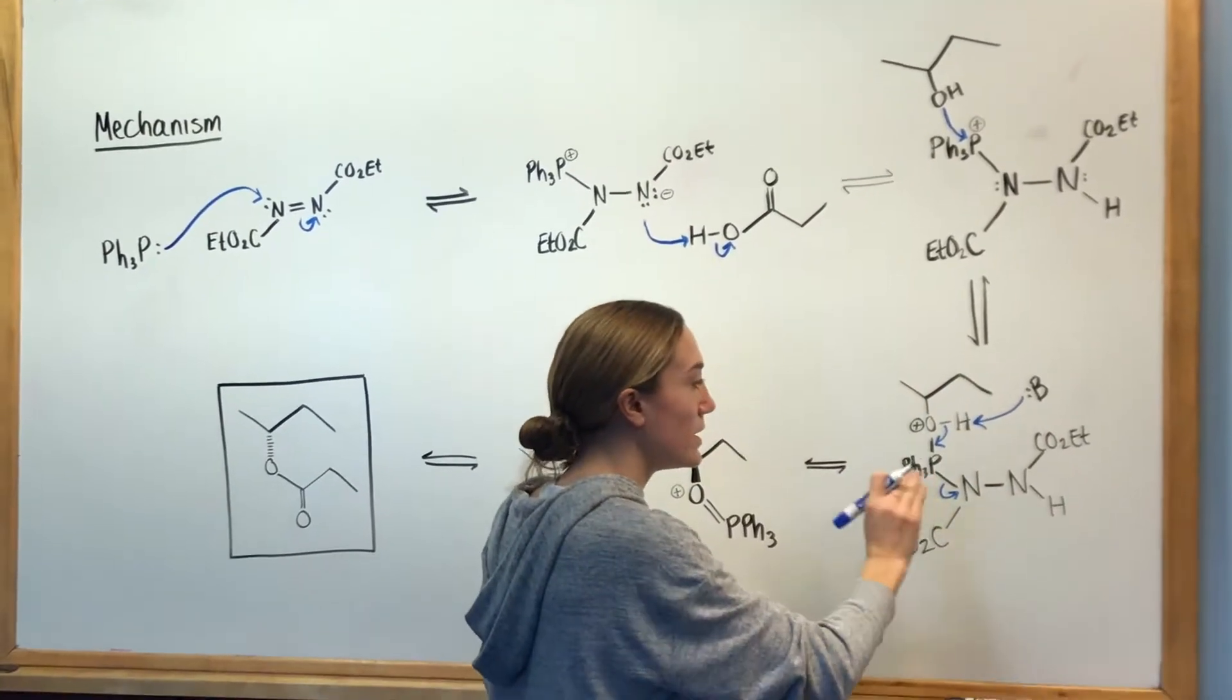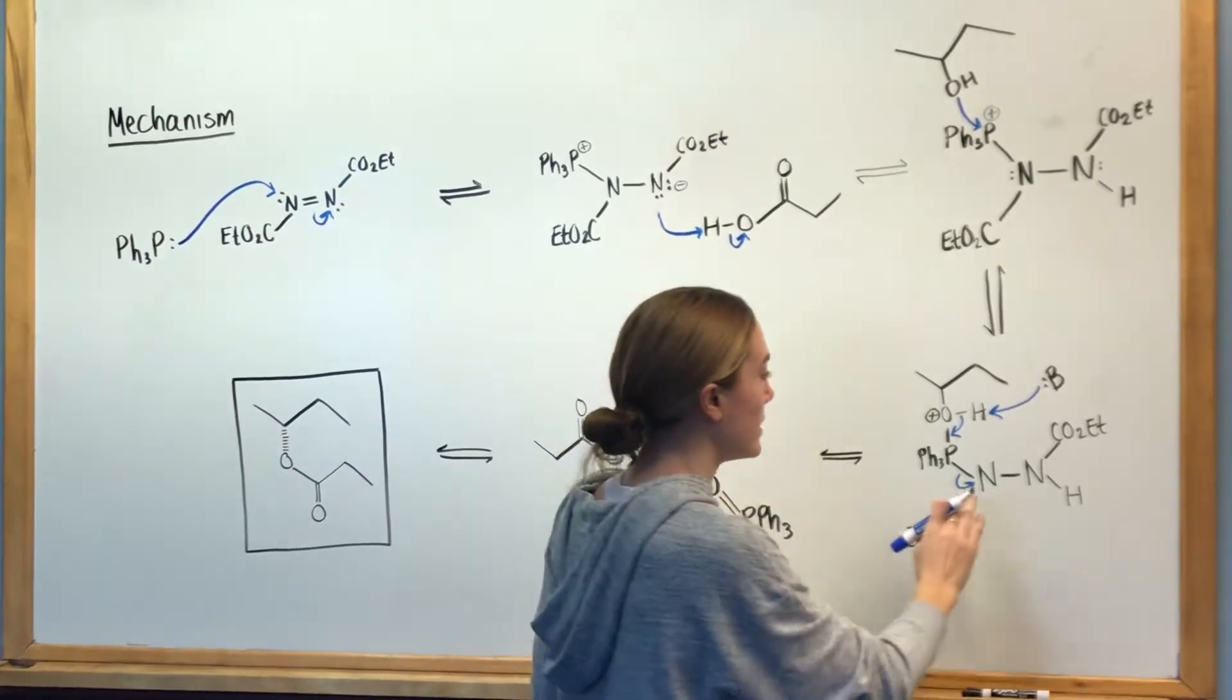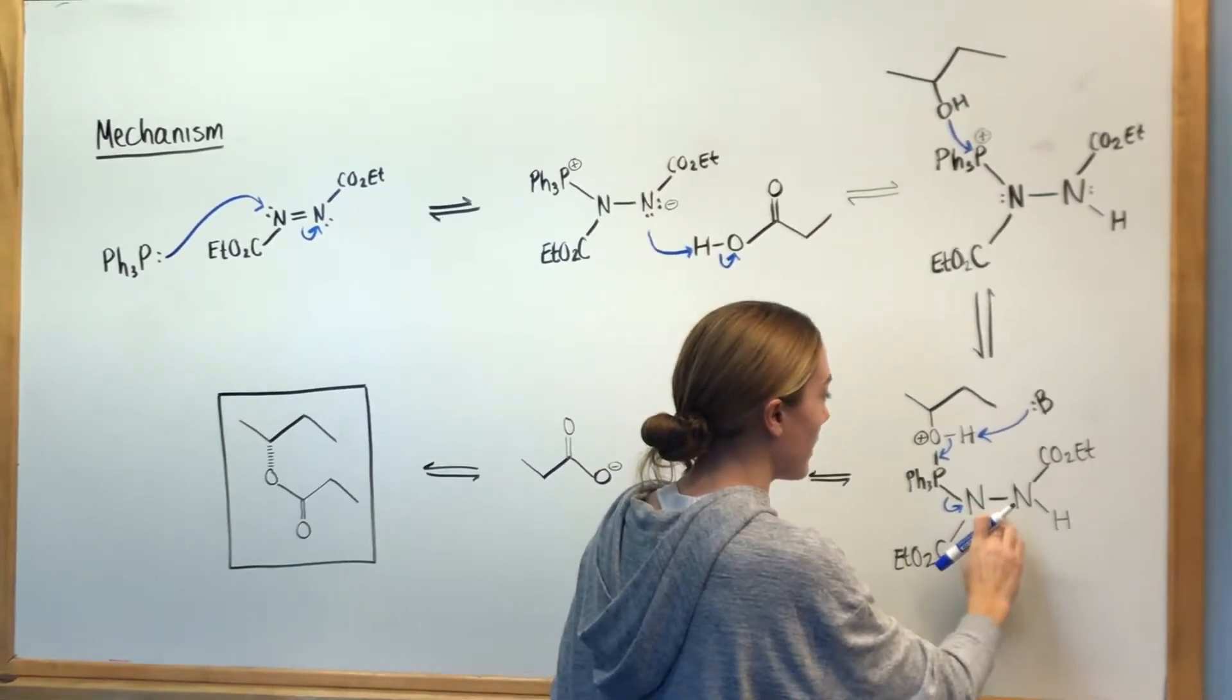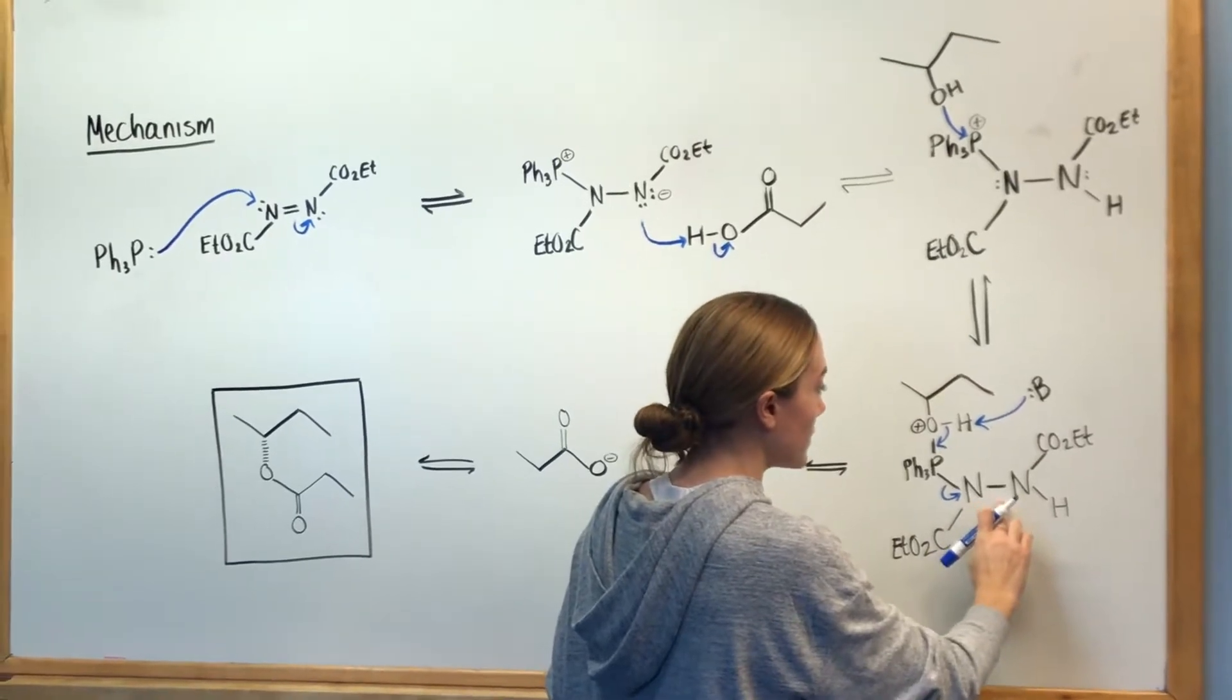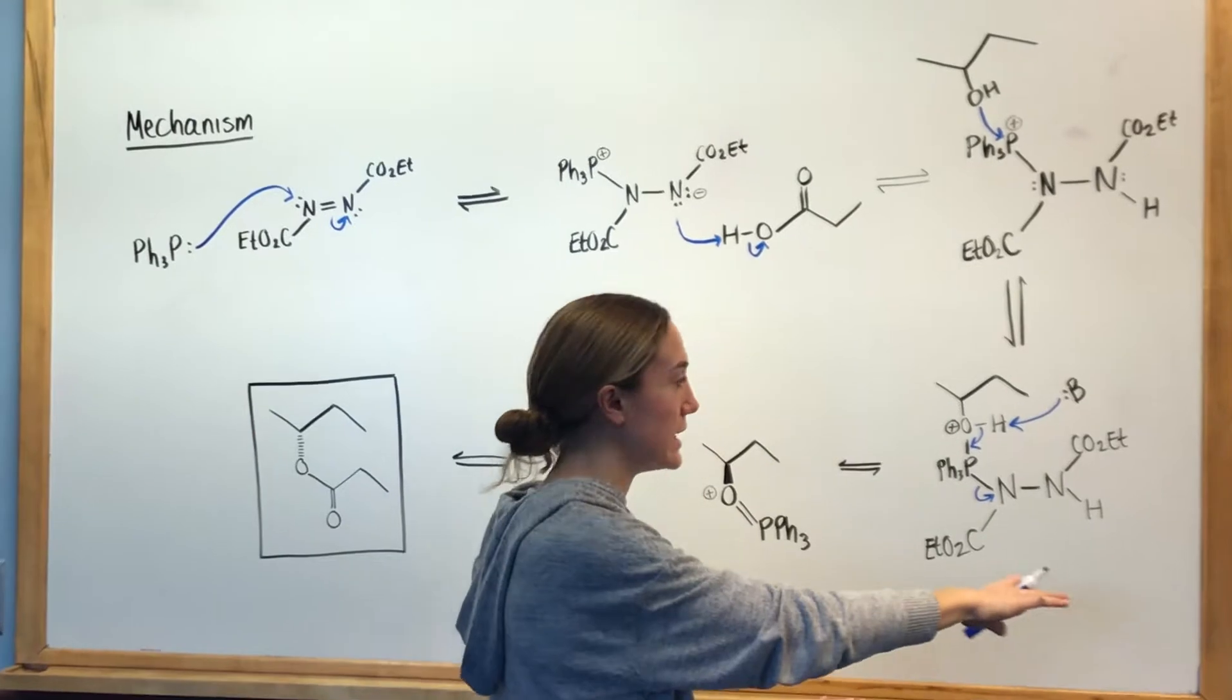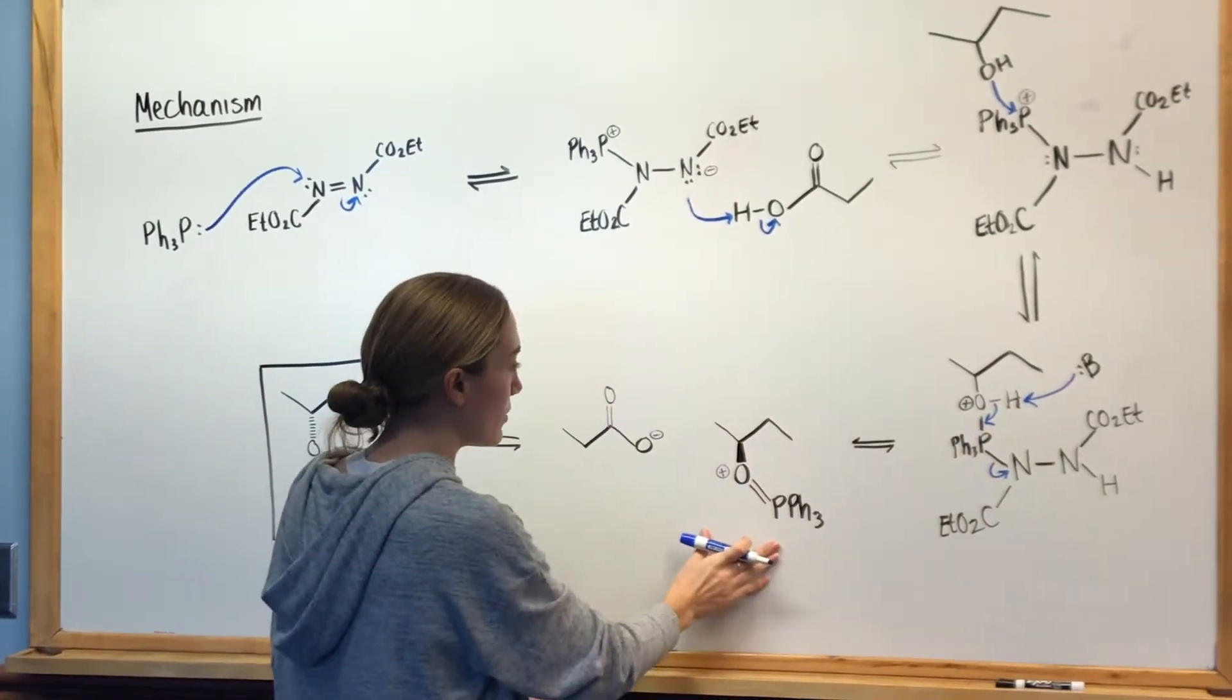Then what will happen after this, not in the main part of the reaction, is that this nitrogen, which is now negative, will have those electrons move over to reform that double bond. A base will grab that proton and that will regenerate the DEAD. So back to the main part of the reaction.